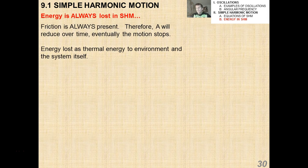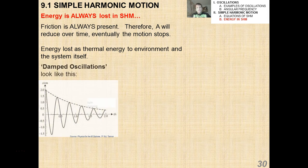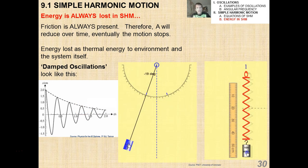I want to talk a little bit about energy loss in simple harmonic motion. You're not responsible for having to explain and derive different types of damping. But I just have to mention that friction is of course always present. Therefore the amplitude will reduce over time, eventually stopping the motion. And the energy loss is lost as thermal energy to the environment and the system itself. So damped oscillations would look something like this. You have kind of this envelope where it's kind of getting thinner and thinner as time goes by.